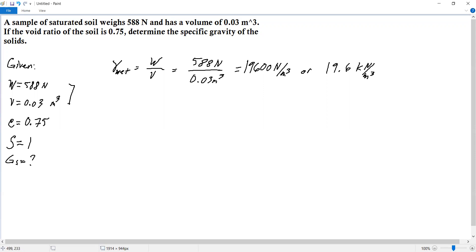Next, how do we get the specific gravity? We have a formula for moist unit weight: gamma equals specific gravity times the unit weight of water, all over 1 plus e, times quantity 1 plus w, which is the water content. What we don't have is the water content.